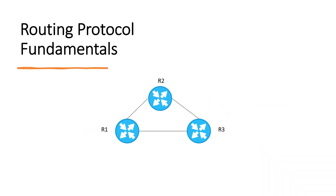Let's look at some routing protocol fundamentals. Routing protocols perform functions such as: Discover — it learns routing information about remote networks from neighboring routers. For example, R1 learns from R2, R2 learns from R1 and R3, and R3 learns from R2 and R1.